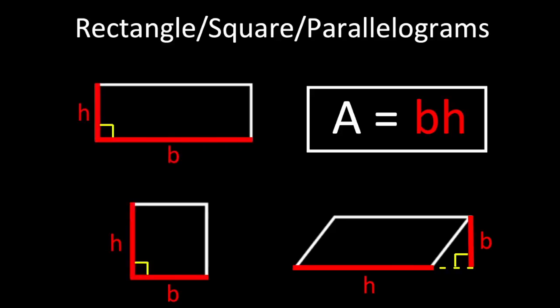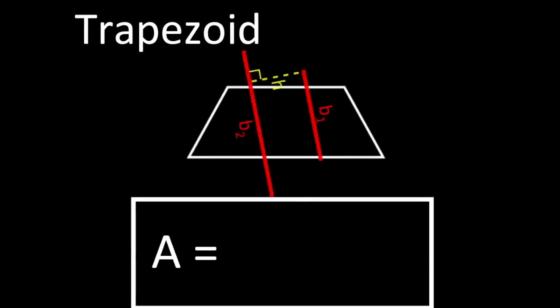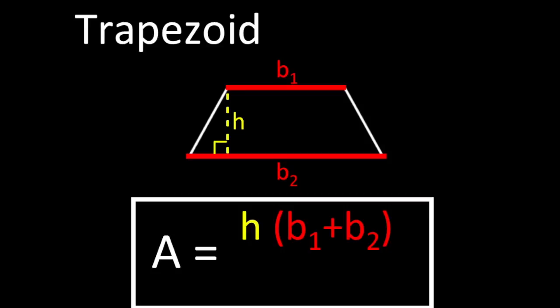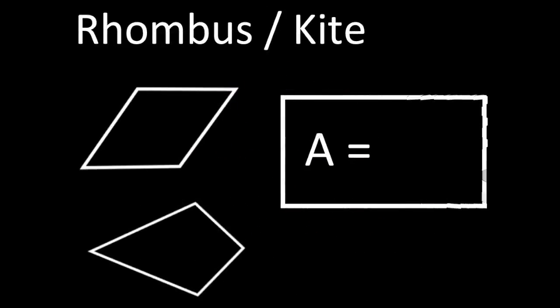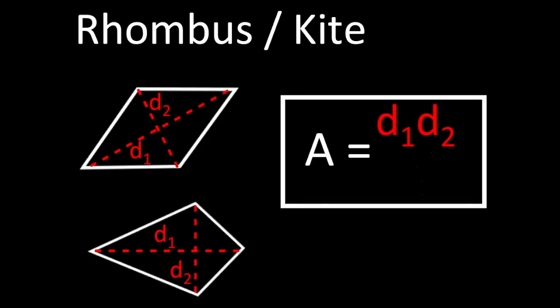Trap you up next, sum of the bases times height, roll up the deuce. What about the rhombus and the kite? Times the diagonals over two.